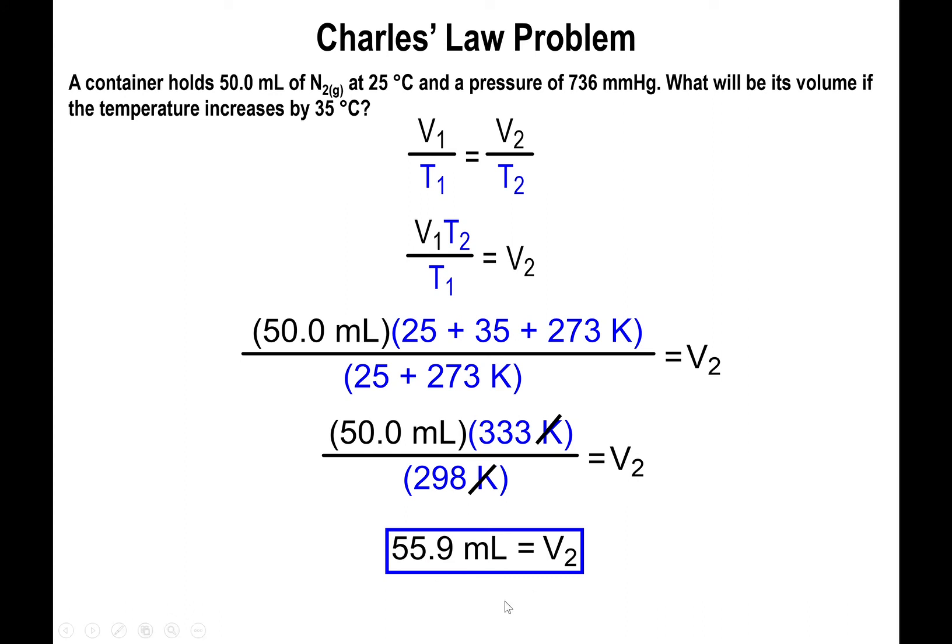Notice that because volume and temperature both increase linearly or decrease linearly, if you increase the temperature—and that's what's happening here, going from 25 to 60 degrees Celsius—you expect the volume to increase as well. We started at 50 milliliters and ended up at 55.9 milliliters. The volume has indeed gone up, and so has the temperature. This is a check to make sure your calculation has been done correctly.